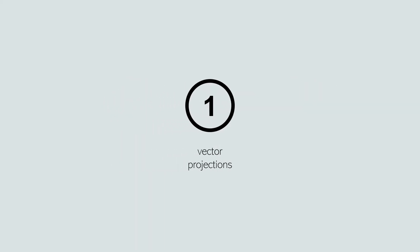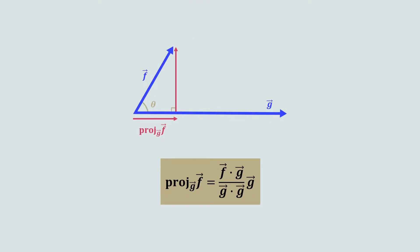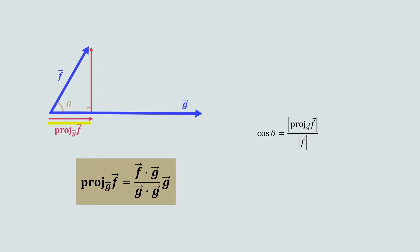Let's begin with vector projections. This is the formula to find the vector projection of f onto g. To truly understand the idea of vector projections, we need to understand what the formula really means. Using trigonometric ratios, cosine theta is adjacent side over hypotenuse, so cosine theta is the magnitude of the projection of f onto g over the magnitude of f, because trigonometric ratios represent the ratios of the side lengths of a triangle — they are lengths rather than vector quantities. Rearranging gives us the magnitude of the projection of f onto g equals magnitude of f times cosine theta. This represents the length of the vector projection, which means it has no direction — it is a scalar quantity.